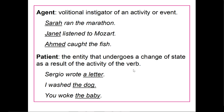A patient is the one that actually undergoes a change of state as a result of the verb's activity. So Sergio wrote a letter — the letter underwent a change of state from being unwritten to written. Or I washed the dog — the dog went from being unclean to clean. You woke the baby — the baby went from being asleep to awake. So the patient is basically the one undergoing the change of state.